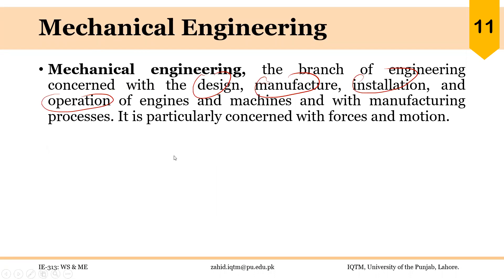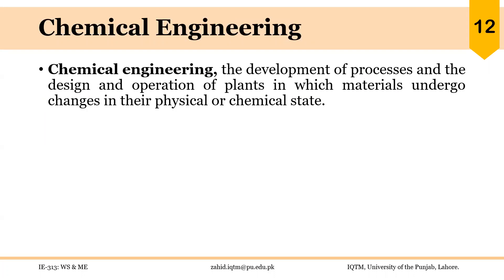I will just read the definitions. I will request you to focus on the key words in every definition. The definition of chemical engineering: it is about the development of processes and the design and operation of plants in which materials undergo changes in their physical or chemical state.